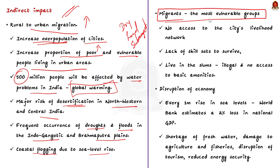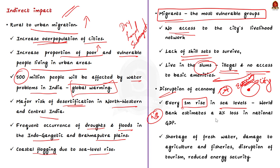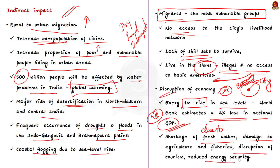Coastal flooding normally occurs when dry and low-lying land is submerged by seawater. This will affect migrants and citizens who are the most vulnerable groups in any city. With no access to the city's livelihood network and lack of skill sets to survive, these groups live in slums which are illegal and have no access to basic amenities. Another indirect impact is the disruption of economy — cities form the center of the economy in many countries. For every one-meter rise in sea level, the World Bank estimates a loss of 2% in national GDP due to shortage of fresh water, damage to agriculture and fisheries, disruption of tourism, reduced energy security and other consequences.